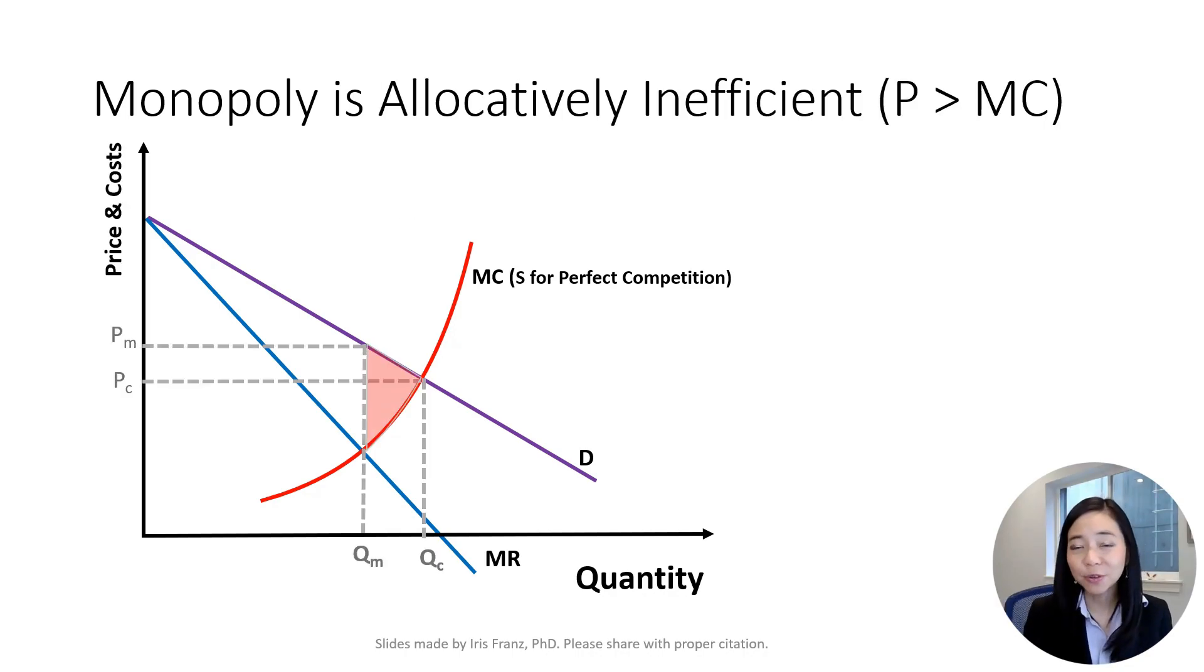Why do we have allocative inefficiency? Because the price is greater than the marginal cost. Let's say a consumer has a willingness to pay V. Because V is higher than PC, this consumer would get the product under perfect competition. Under monopoly, the price is PM, so this consumer will not get the product.